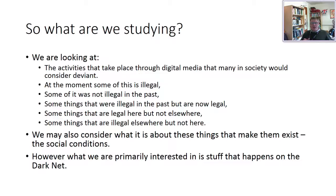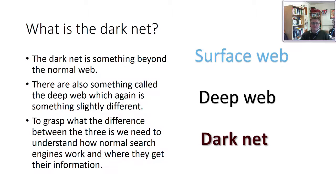We may also consider what it is about these things that makes them exist — the social conditions that produce criminal action. However, we are primarily interested in stuff that happens on the darknet. The darknet is something beyond the normal web. You're all familiar with the internet — Google, Facebook, websites we surf, BBC news pages — that's the surface web, stuff which is easily findable. There's also something called the deep web, which is quite different. To grasp the difference between the three, we need to understand how normal search engines work and where they get their information.